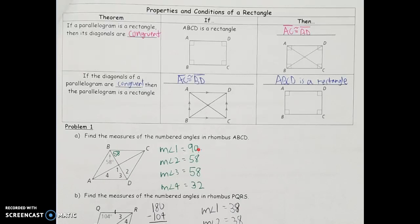Angle 1 comes from the property that the diagonals of a rhombus are perpendicular. If they're perpendicular, I have four right angles where the diagonals meet in the middle, so angle 1 is 90 degrees. To find angle 4, I use angles 1 and 3 together: 90 plus 58 is 148. Subtracting from 180 gives me 32 degrees for angle 4.